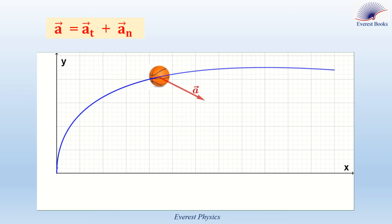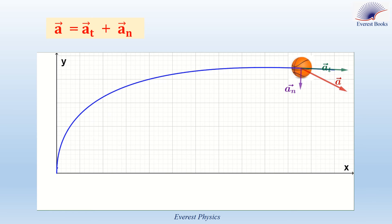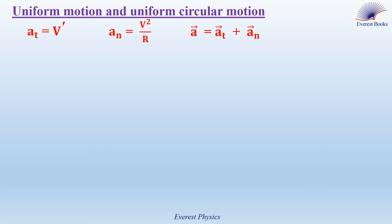This animation shows the acceleration vector of a moving particle along a curved path. The animation shows the tangential and the normal components of the acceleration vector A. So, A vector can be written as A_T vector plus A_N vector. Since A_T and A_N are perpendicular to each other, the magnitude of the acceleration vector equals the square root of the magnitude of the tangential acceleration squared plus the magnitude of the normal acceleration squared.